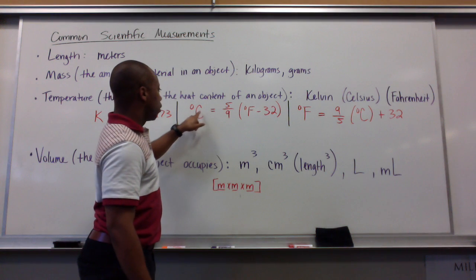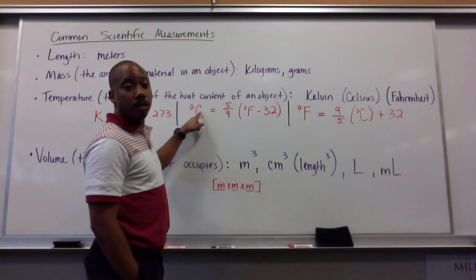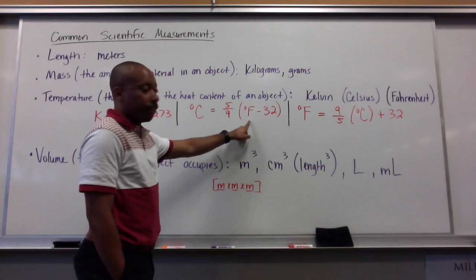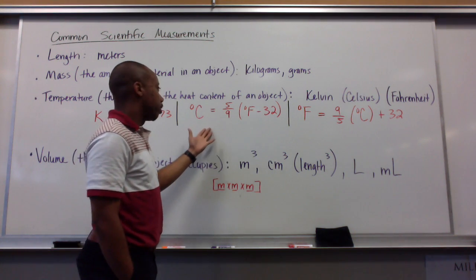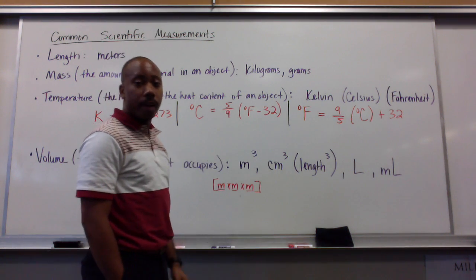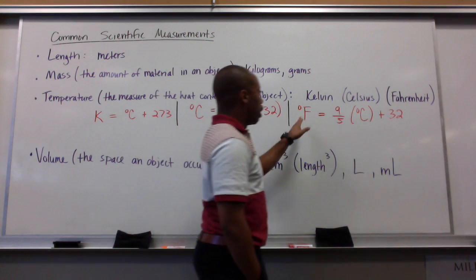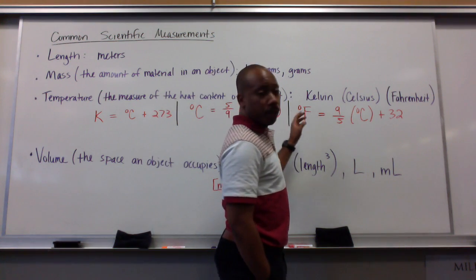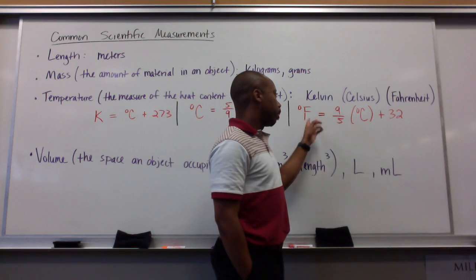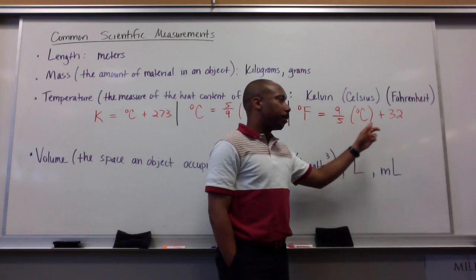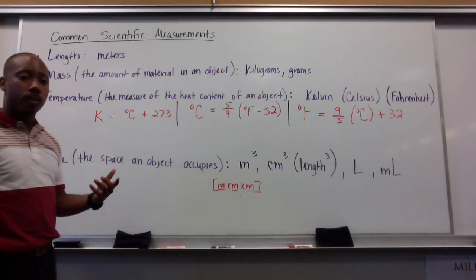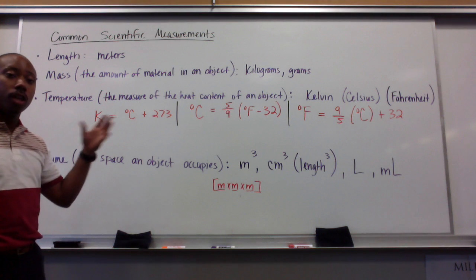If I wanted to know how many degrees Celsius is equated to a certain temperature in degrees Fahrenheit, I would use this equation. Degrees Celsius equals 5 ninths times degrees Fahrenheit minus 32. If I wanted to know my temperature in degrees Fahrenheit from a temperature given to me in degrees Celsius, I would use this equation. Degrees Fahrenheit equals 9 fifths times degrees Celsius plus 32. We'll use these later on in the classes, just an introduction to these relationships.